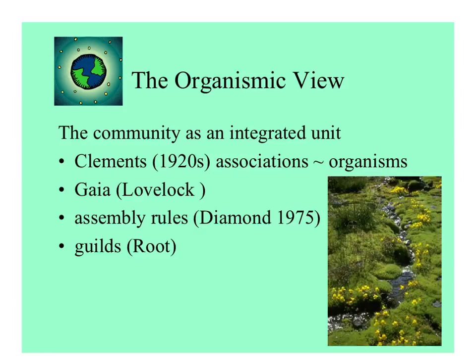It was first Frederick Clements in the 1920s who equated plant associations with organisms. This kind of built up even higher with Thomas Lovelock's Gaia Hypothesis, which views the whole world as a living organism. Jared Diamond proposed assembly rules for communities, applying them to animals and plants. And Dick Root, also in the late 70s, was the one to coin the term 'guild' for species that are unrelated but do a similar job.